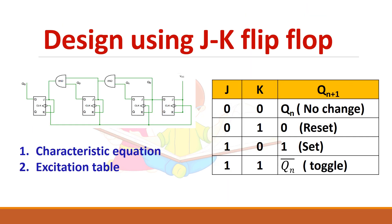To design using a JK flip-flop, we need to know the characteristic equation and excitation table apart from the truth table. These are required to design any counter or register using JK flip-flop. From the truth table: when J and K are both 0 there is no change; when J=0, K=1 the flip-flop resets; when J=1, K=0 it sets; and when both inputs are 1, toggling occurs.